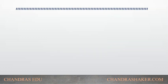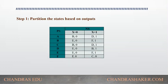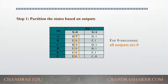The first step involved is to partition based on the outputs. First we need to check for x equal to 0, what are the outputs. When we see here, all the outputs are 0 for this state machine. So there is no distinguishability of the states and we can't make any partition with respect to x equal to 0.